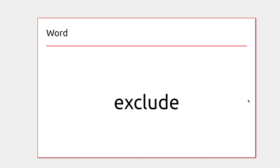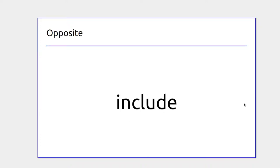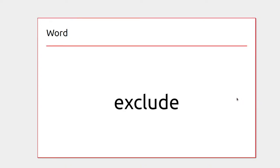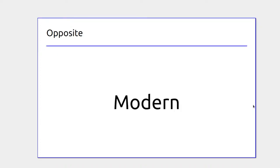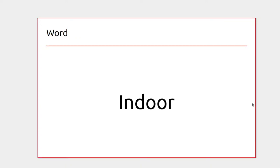You might exclude some items from a promotion — like 50% off storewide, excluding alcohol due to legislation. Include is where something is part of a promotion or deal. Ancient things happened a long time ago, like the pyramids, whereas modern things are relatively new — like the Eiffel Tower or Statue of Liberty.